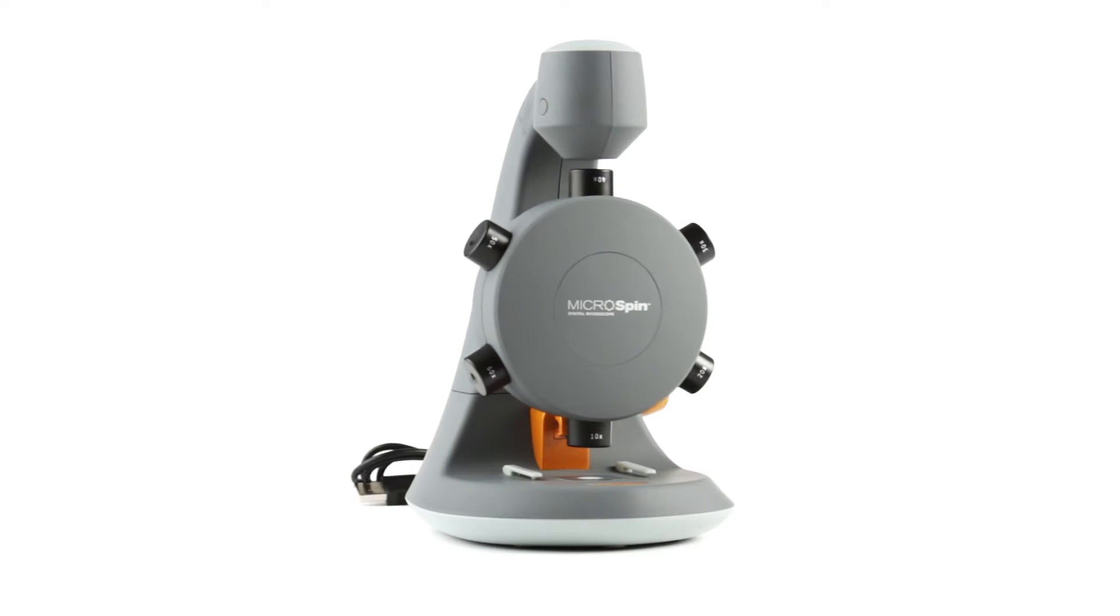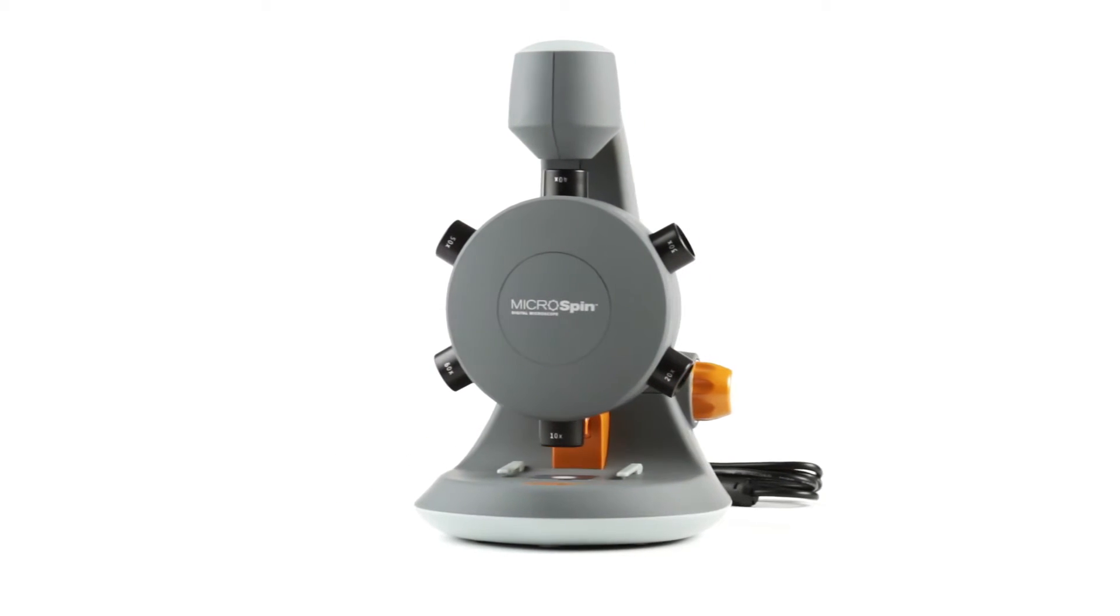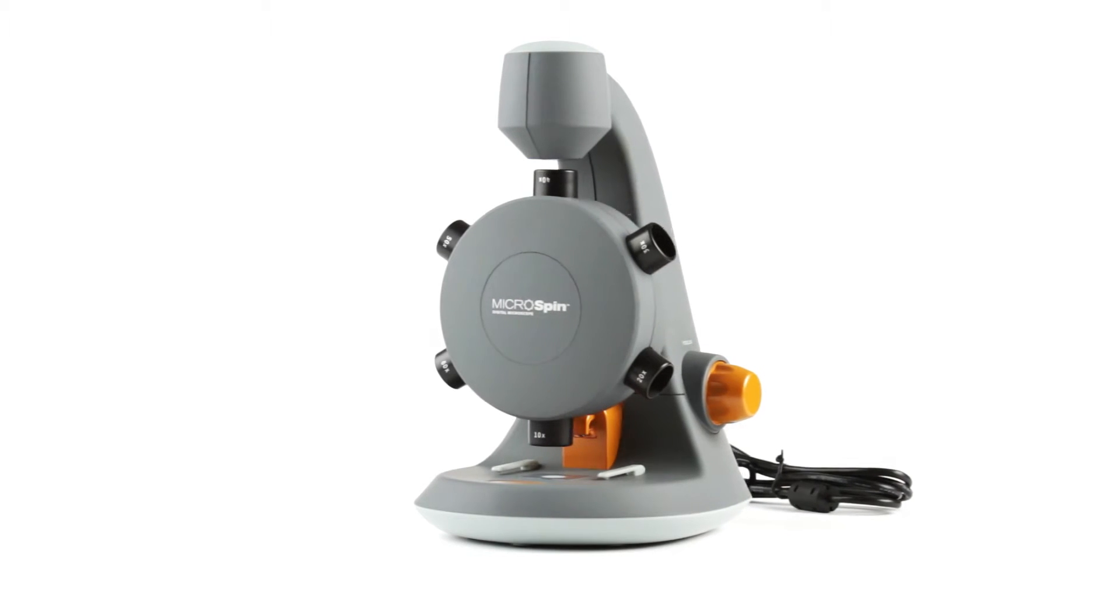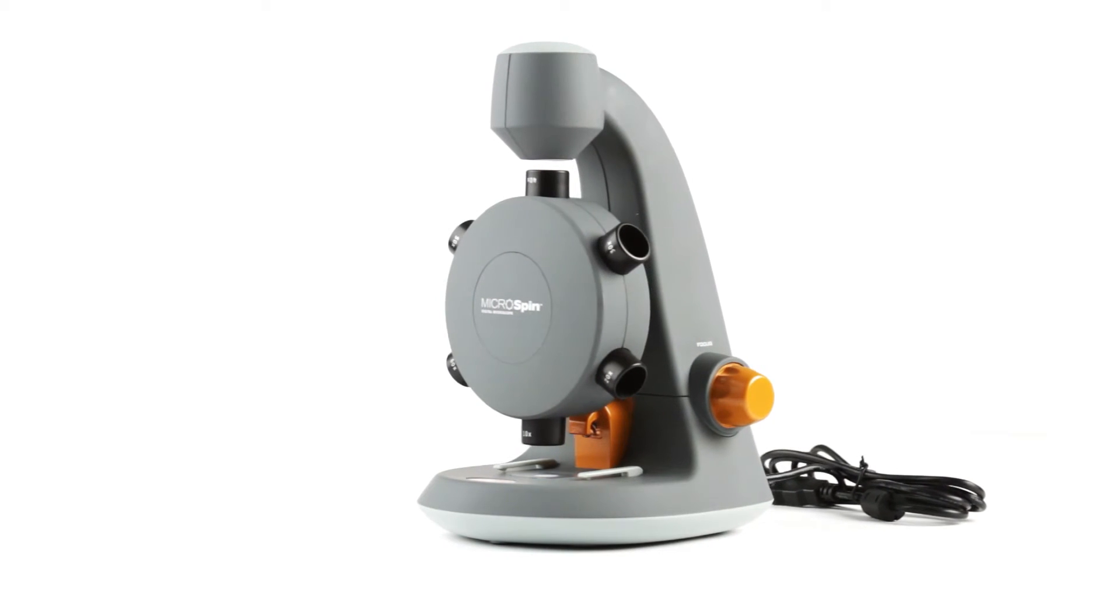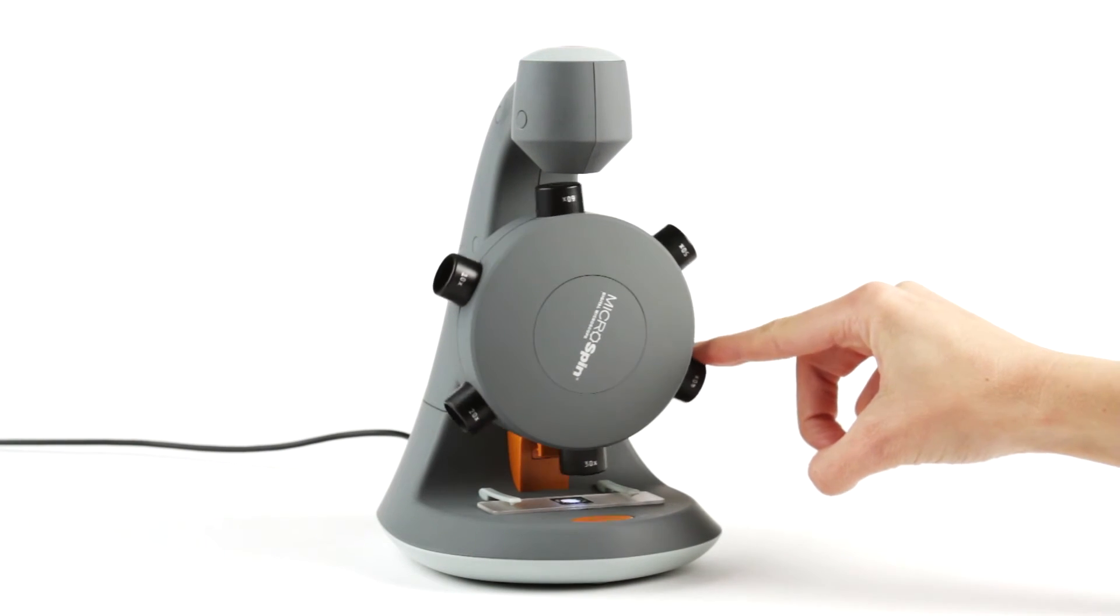Spin, snap, save and share. The Celestron Microspin Digital Microscope features six objective lenses ranging from 10 times to 60 times on a rotating wheel. Spin the wheel until the desired lens clicks into place.